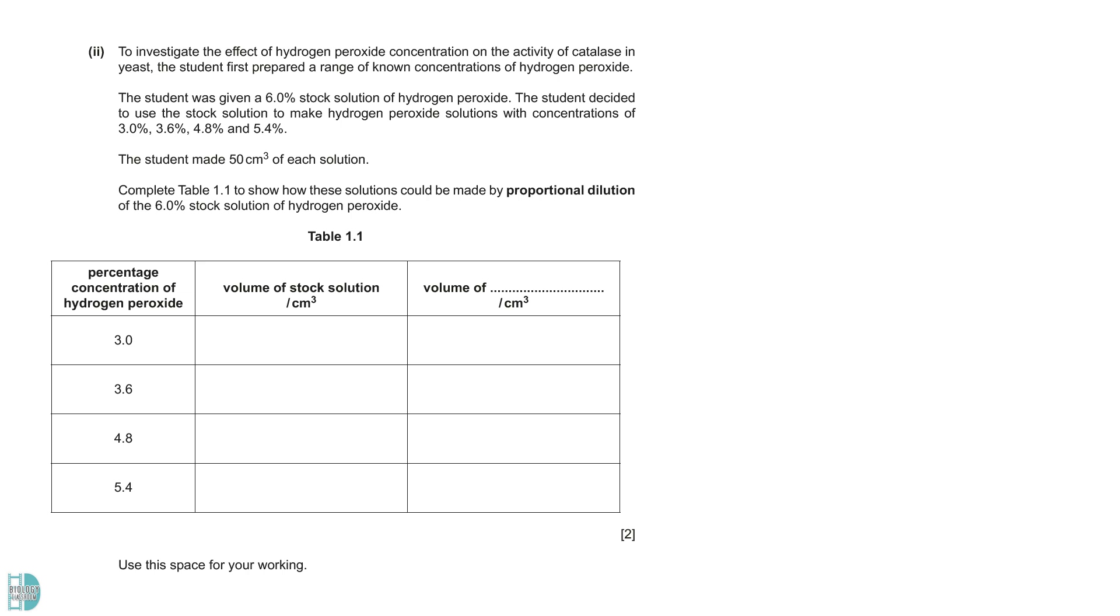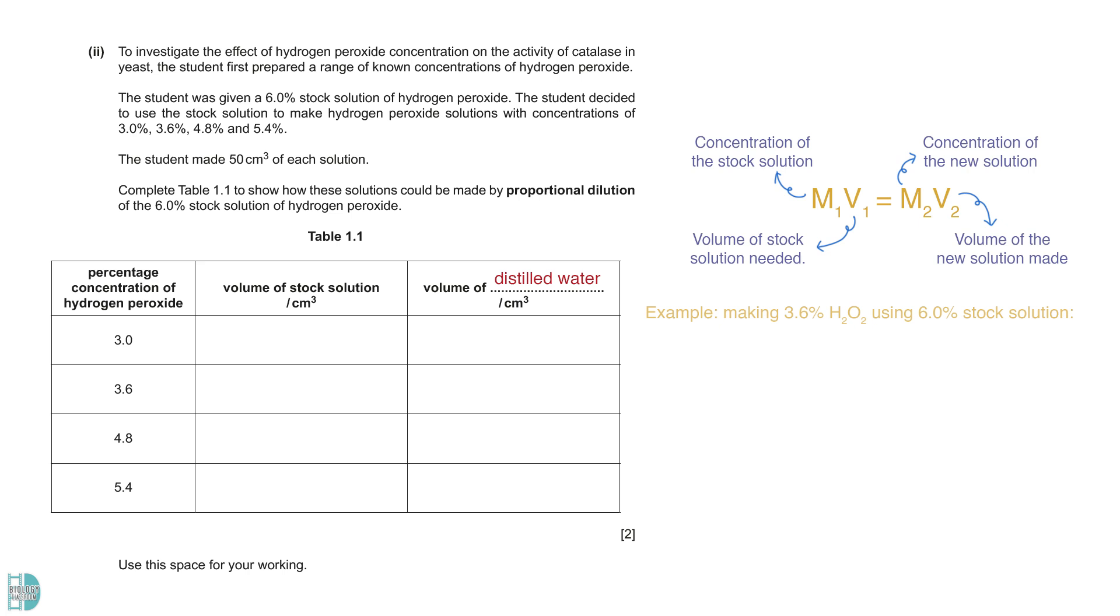Question 2 wants you to show how proportional dilution of a 6% stock solution is done to obtain another 4 concentrations. Distilled water is used to mix with the stock solution to dilute it. To calculate the stock solution and distilled water needed for each concentration, you can use the formula M₁V₁ equals M₂V₂. M₁ is the concentration of the stock solution, and V₁ is the volume needed. M₂ and V₂ are the concentration and volume of the new solution made. Let's use the 3.6% hydrogen peroxide as an example. The stock solution we have is 6%. V₁ is what we are trying to find out. We are now preparing a 3.6 solution, so this is our M₂. The question says that we are preparing 50 cm³ of each solution, so this is our V₂. V₁ is equal to 30 cm³.